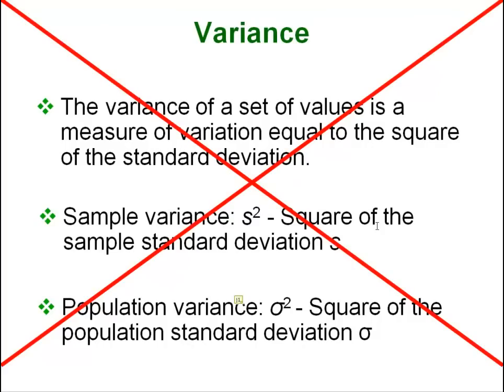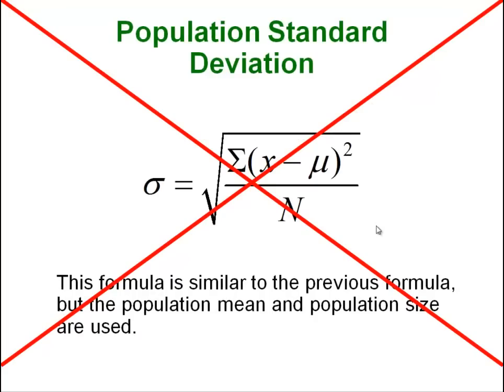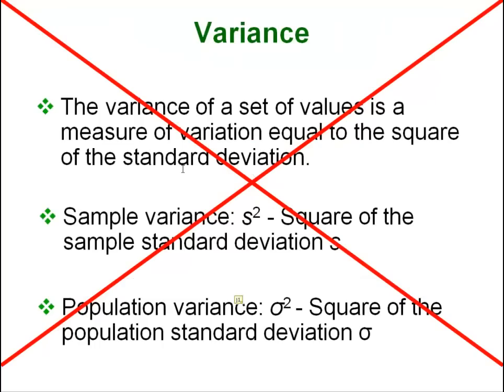Variance is just the square of standard deviation. In our formula, if we didn't take the square root, then this thing would be squared and that would be variance. You can see why variance is kind of a silly thing to report because if you know standard deviation, all you have to do is square it and you have variance. So most people ignore it and don't report it.